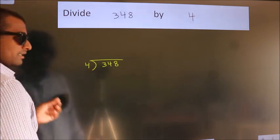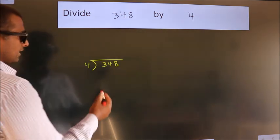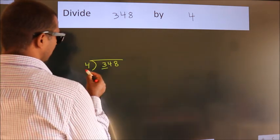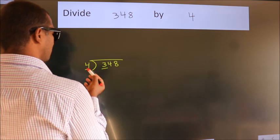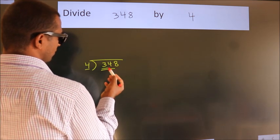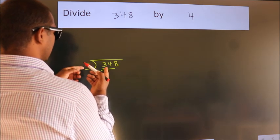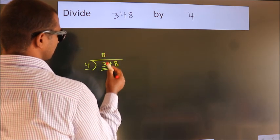This is step 1. Next, here we have 3, here 4. 3 is smaller than 4, so we should take 2 numbers: 34. A number close to 34 in the 4 times table is 4 eights, 32.